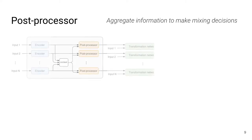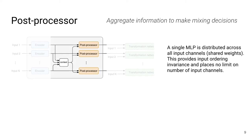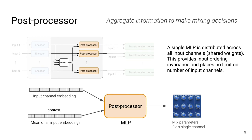That information gets passed on to each post processor, which tries to aggregate the information in order to make mixing decisions. The post processor takes as input two different embeddings: first, the input embedding for the perspective channel, as well as a context embedding, which is computed simply by taking the mean across all input channel embeddings. We apply this post processor once for every channel, switching out the input channel embedding each time. It is trained to predict a vector of parameters that will be passed on to the transformation network — parameters that are directly the human-interpretable parameters of a normal mixing console.